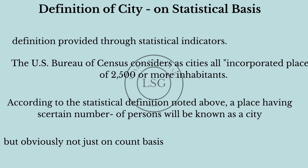The next definition of a city is based on a statistical basis — definition provided through statistical indicators. The US Bureau of Census considers as cities all incorporated places of 2,500 inhabitants or above. So according to this statistical definition, a place having a certain number of persons will be known as a city.